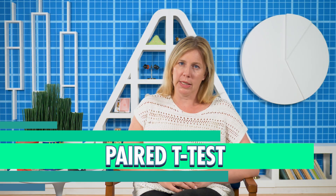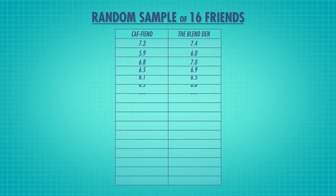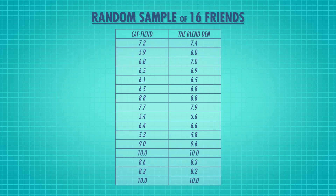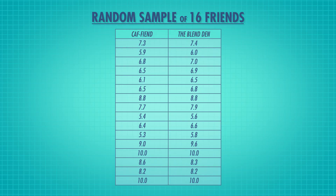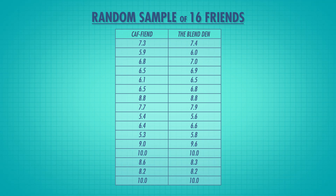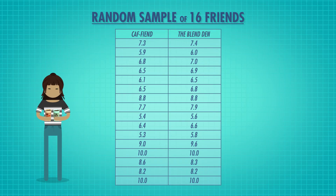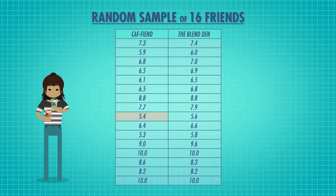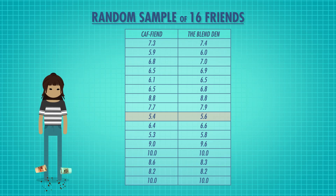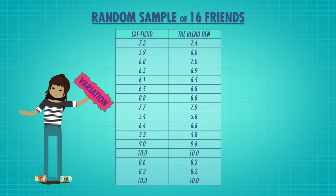One solution to this issue is a paired t-test. You could pair up your friends based on how much they like coffee, then randomly assign one to Caffeined and the other to The Blend In. But the best match for a person is themselves — so you decide to call another random sample of 16 of your friends. This time you give all of them both Caffeined coffee AND The Blend In coffee, and they record their scores. Now that everyone has scored both coffees, you can be sure that the two groups have the exact same level of coffee affinity, since it's the exact same people.